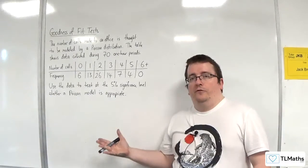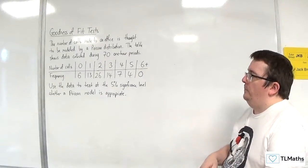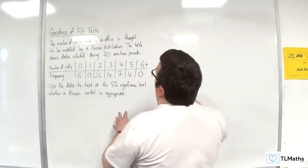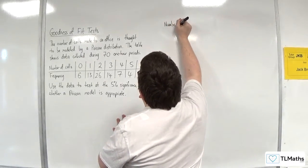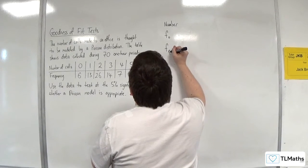We don't have a uniform distribution this time, we're working with a Poisson distribution. The first thing I'm going to do is redraw my table. We've got the number of calls, then the observed frequencies, and then I want the expected frequencies.